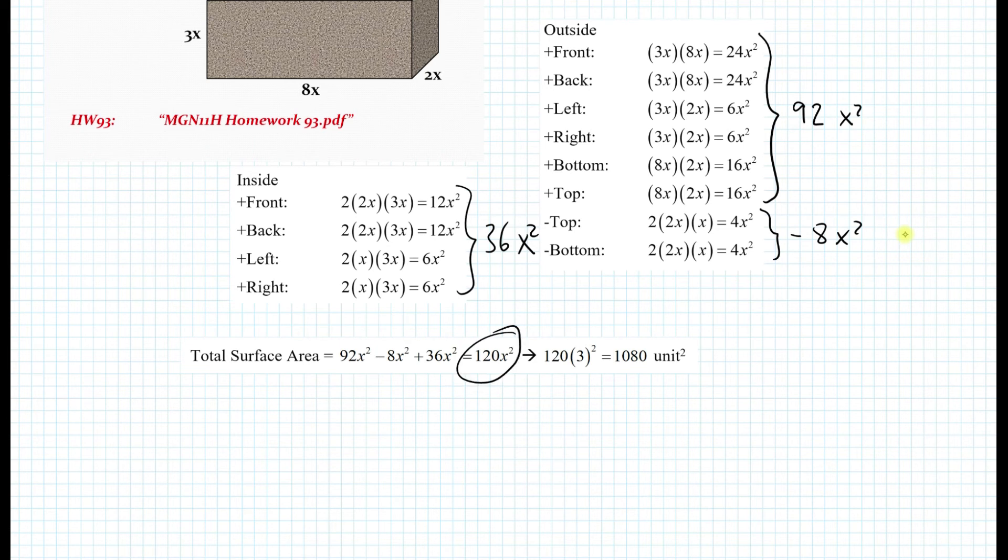So the only thing remaining is to substitute x equal to 3. And then you end up with 1080 units squared. Now, since 3 is in inches, we can also write that the total surface area is equal to 1080 inches squared. And that is the answer.